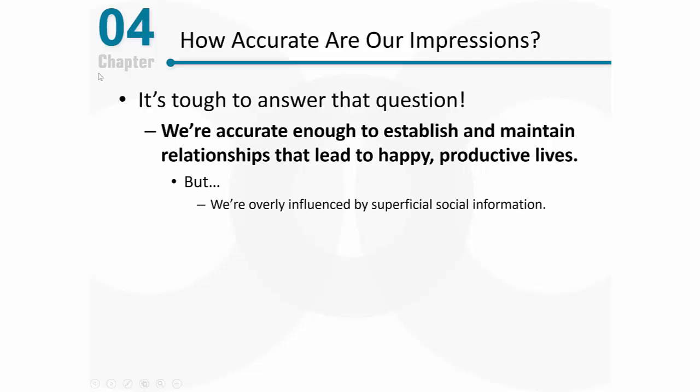But we talked about several problems. For example, we're overly influenced by superficial social information. Someone could be wearing the wrong clothes, according to my own perspective, and I'm going to view them really negatively. We know that's superficial, and we know that can lead to serious bias.